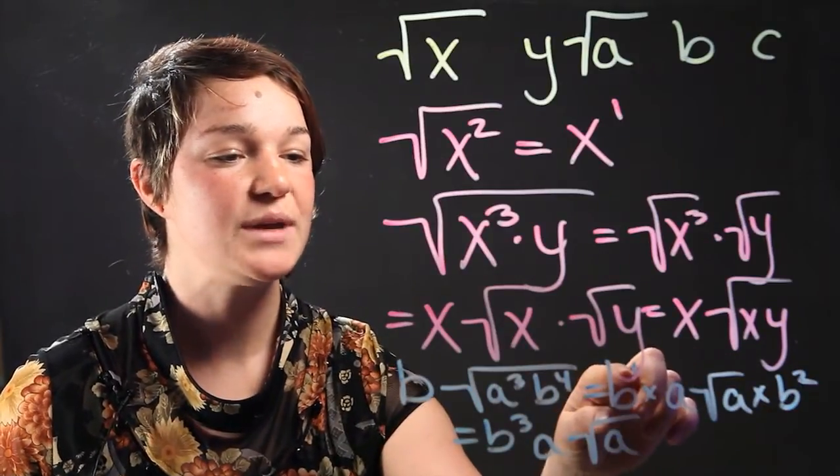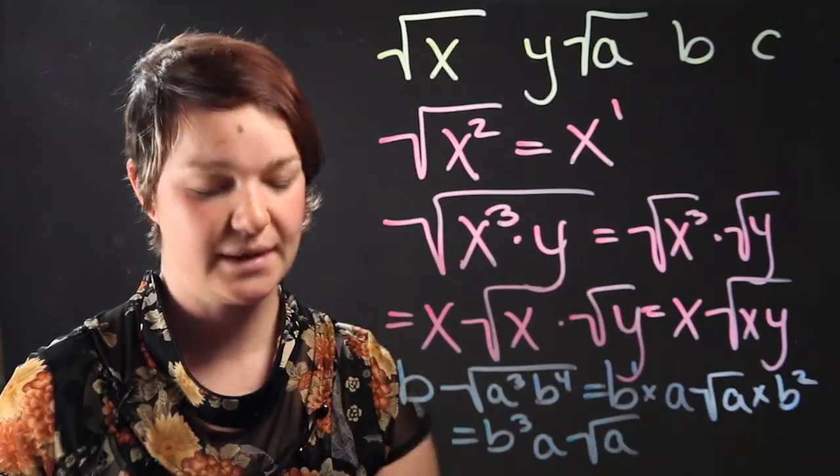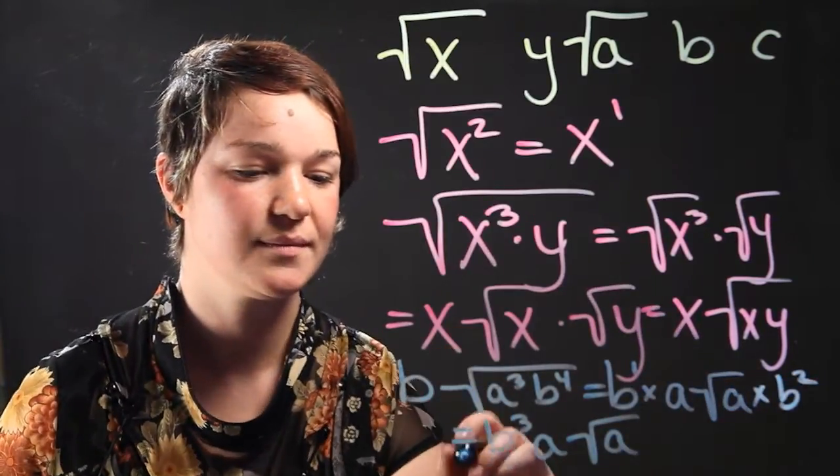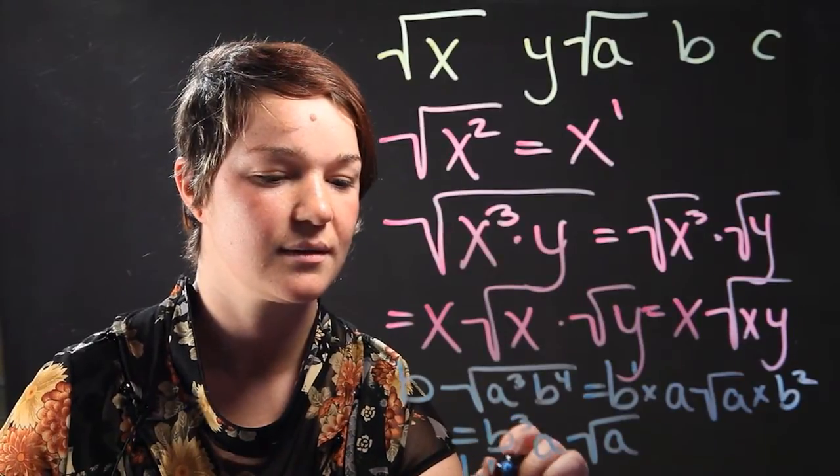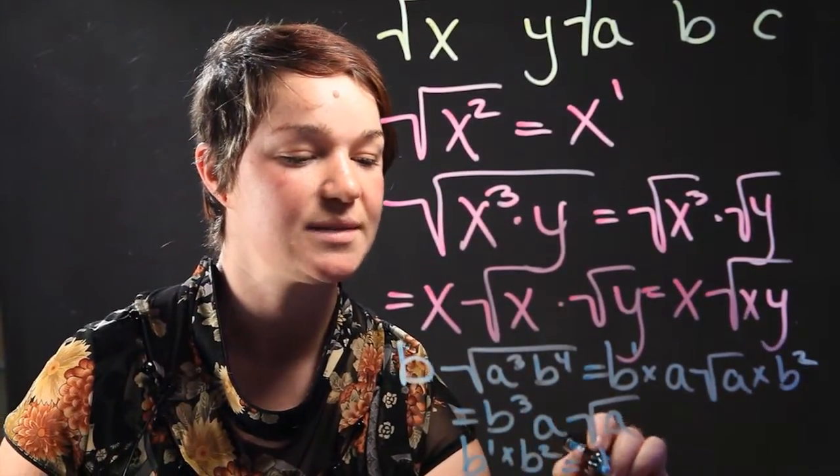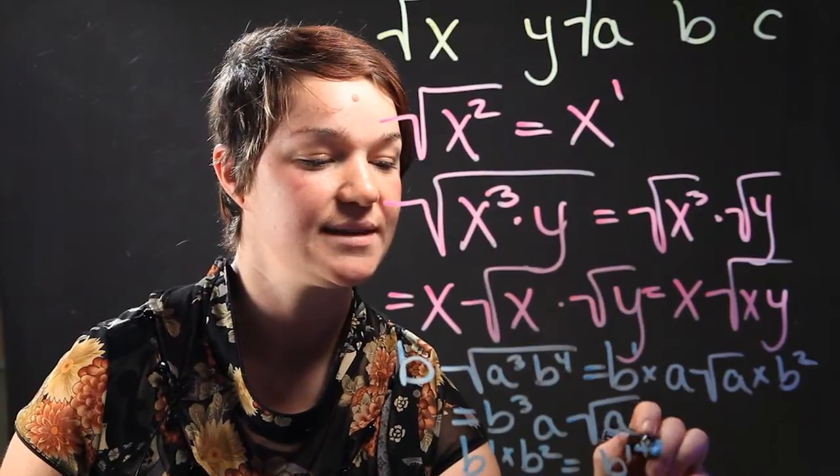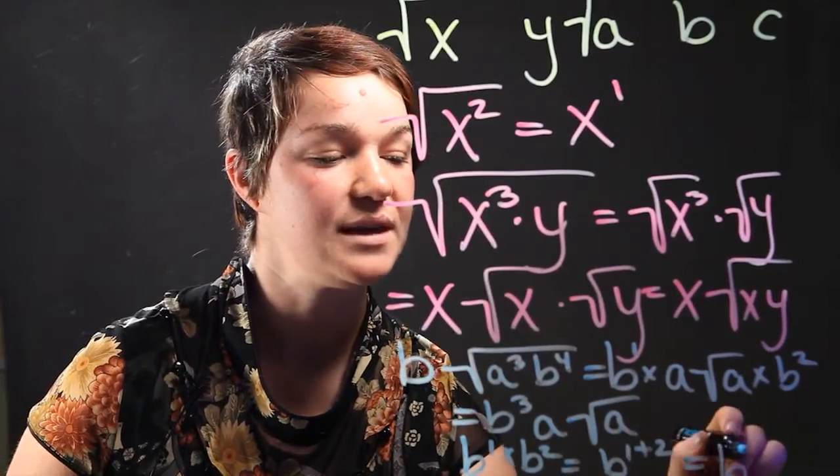So b to the 1 power times b to the 2 power is the same as b to the 1 plus 2 power or b cubed.